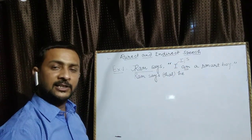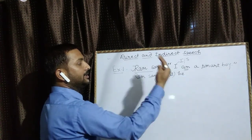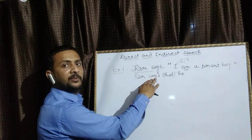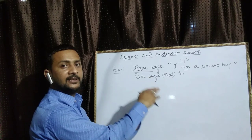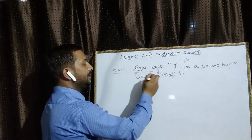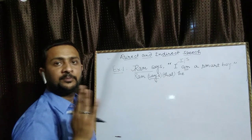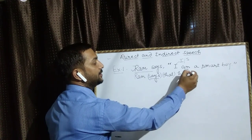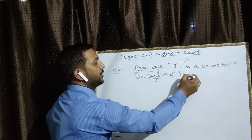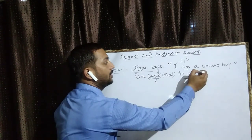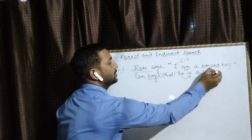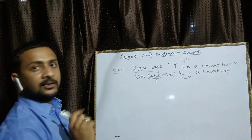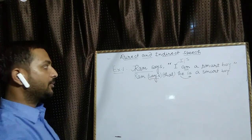अब tense change करते हैं — 'am' लिखा है, present tense है। यह change किस situation में किया जाता है? जब reporting verb की side में verb past में हो। आप देख रहे हैं reporting verb में 'says' लिखा है — says means present verb। तो अगर यह side present या future होता है तो tense को change नहीं करते हैं। Rest of the sentence जैसा का तैसा लिख देते हैं।